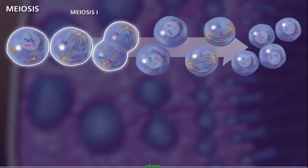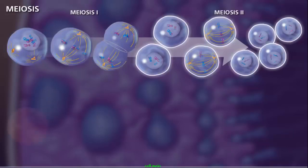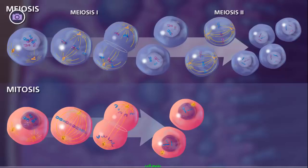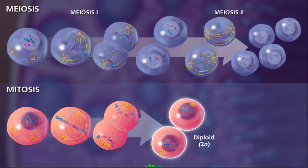These divisions are termed meiosis I and meiosis II. Although the processes of mitosis and meiosis look similar, there are a few major differences. One obvious difference is that mitosis results in two diploid daughter cells, and meiosis results in four haploid cells.